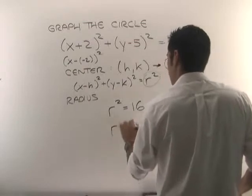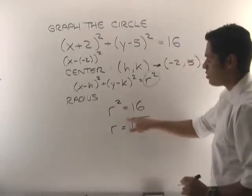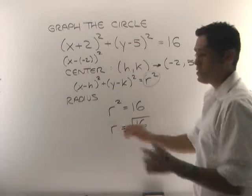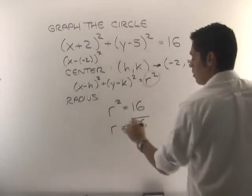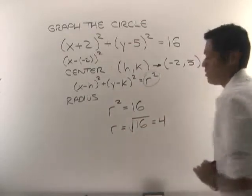So r equals square root of 16. Now normally we would do plus or minus here, but because the radius of the circle is always positive, we're just going to look at the positive answer and that's just 4.